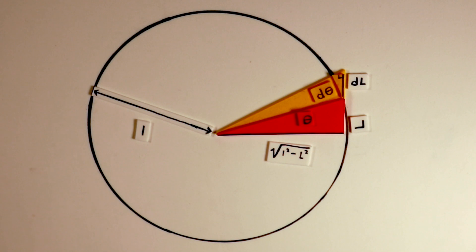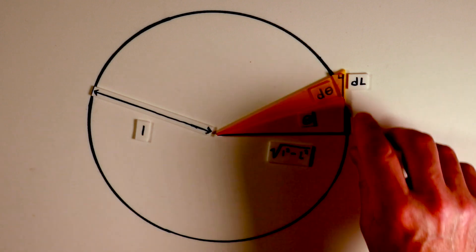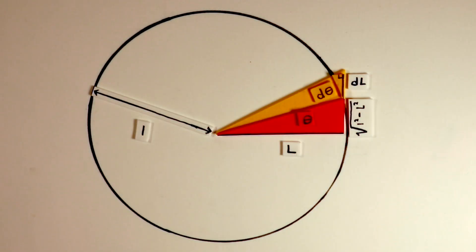To understand how the derivative of the cosine function relates to the sine, let's adjust our perspective on the original triangle within the unit circle. We'll switch the labels for the horizontal and vertical legs. Now the cosine of theta is represented by L over 1, or simply L. And the sine of theta becomes the square root of 1 squared minus L squared over 1.